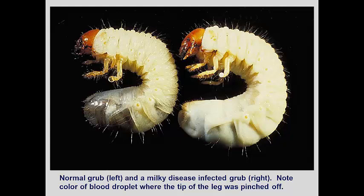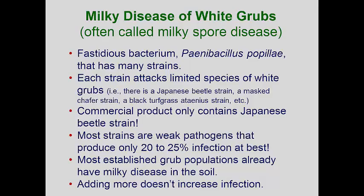Some people call this milky spore disease, but this is actually the name of a commercial product made from the ground-up dead bodies of milky disease-infected Japanese beetle grubs. The different strains of Paenibacillus popilliae are extremely fastidious, meaning each strain will only kill one species or genus of white grubs. The commercial strain is only derived from Japanese beetle grubs. Most strains are considered weak pathogens, killing only 20–25% of a population, often less. Virtually all grub populations across North America have infections from these bacteria, and research has shown that adding more spores to the soil does not increase the infection rate.